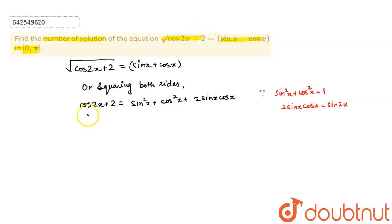So, I can transform this equation into, therefore, 2 plus cos 2x equals 1 plus sin 2x. On simplifying and transposing, what do I get? This implies sin 2x minus cos 2x equals 1. Correct?